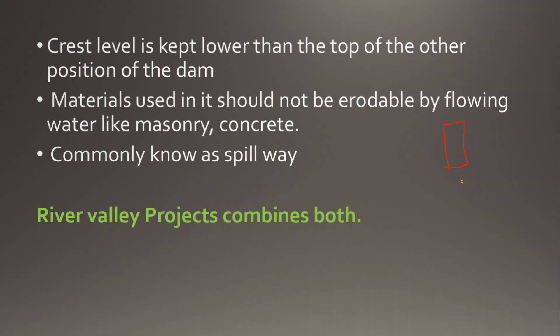We collect rainfall data from the previous 5, 10, and 15 years. Based on this data collection, we determine a conclusion: up to what height water will come into the reservoir. If we don't collect data and build blindly — say 85 meters seems safe — but rainfall increases in coming years and water rises to 95 meters, overflow will occur. We must account for this carefully.